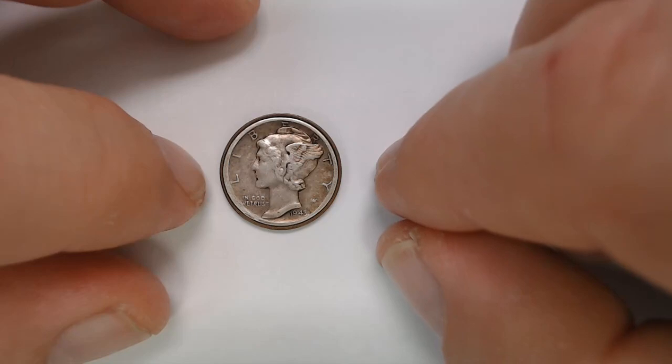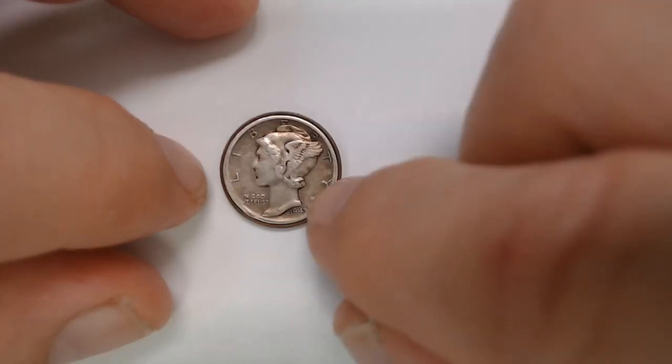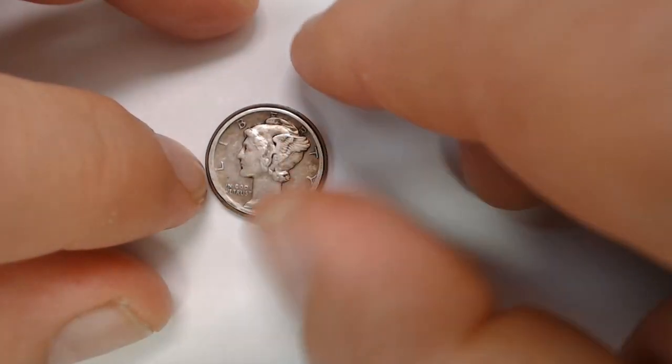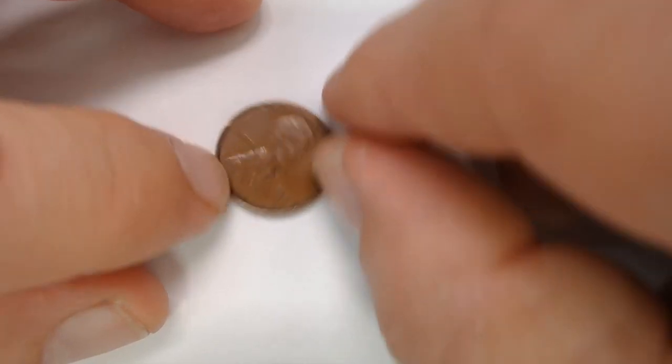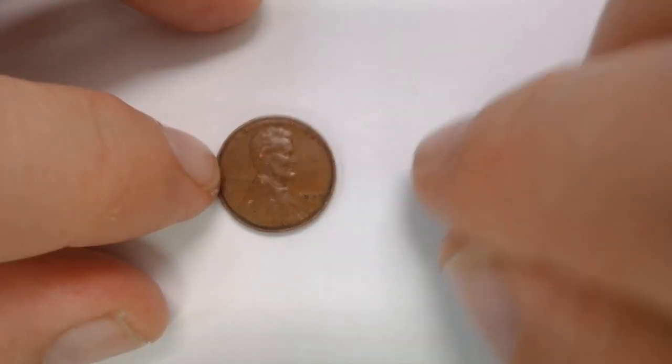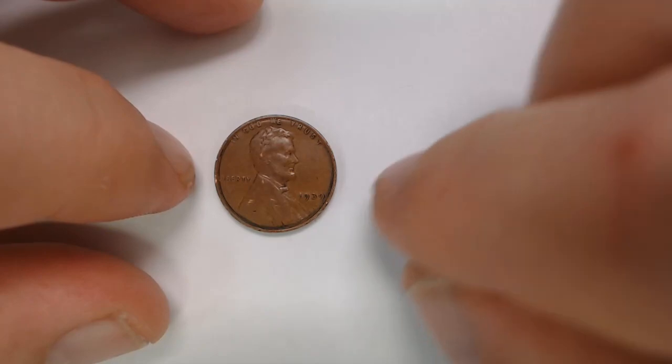This does not happen at the mint. This is not how dual denominations happen. Matter of fact, dual denominations is actually just a nickname for a coin that was overstruck on another coin, and we'll take a look at those in a minute.